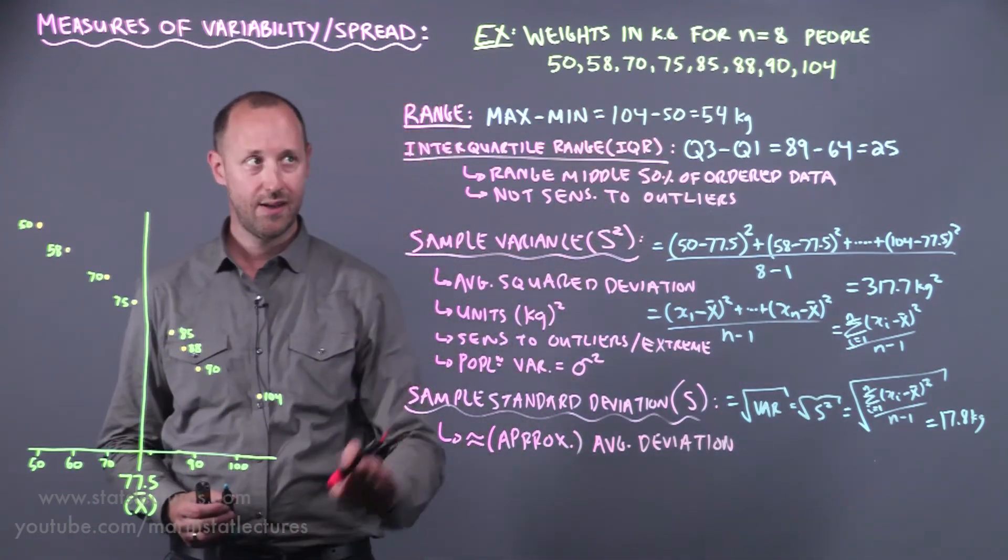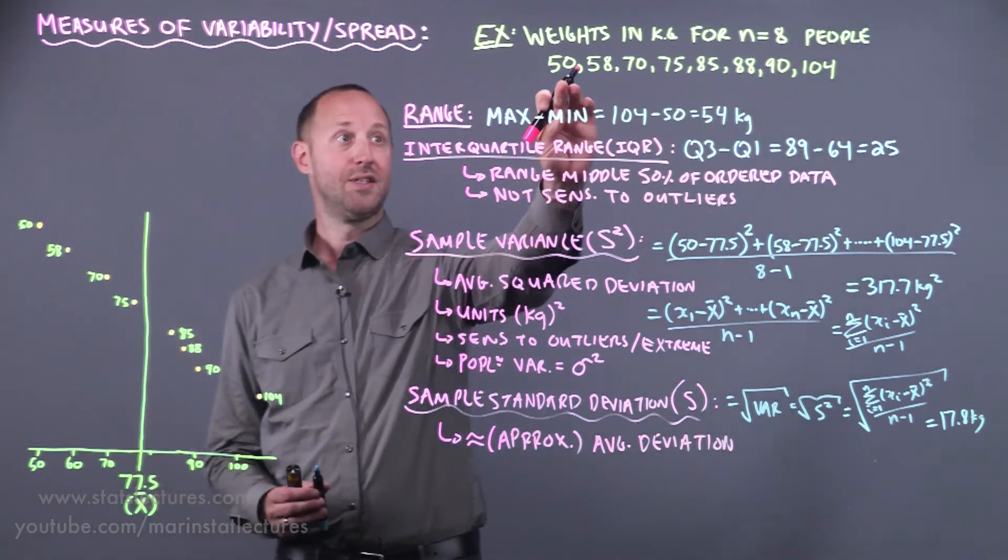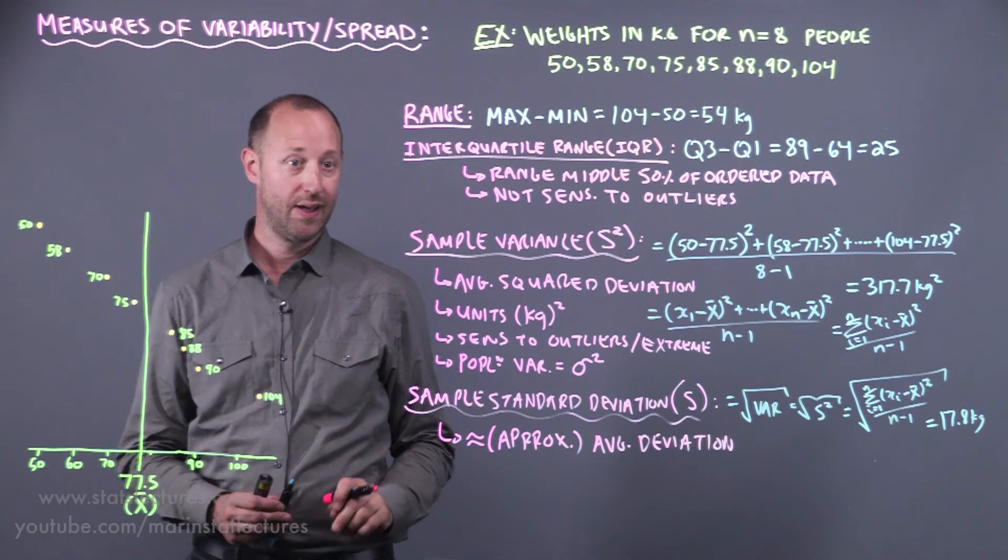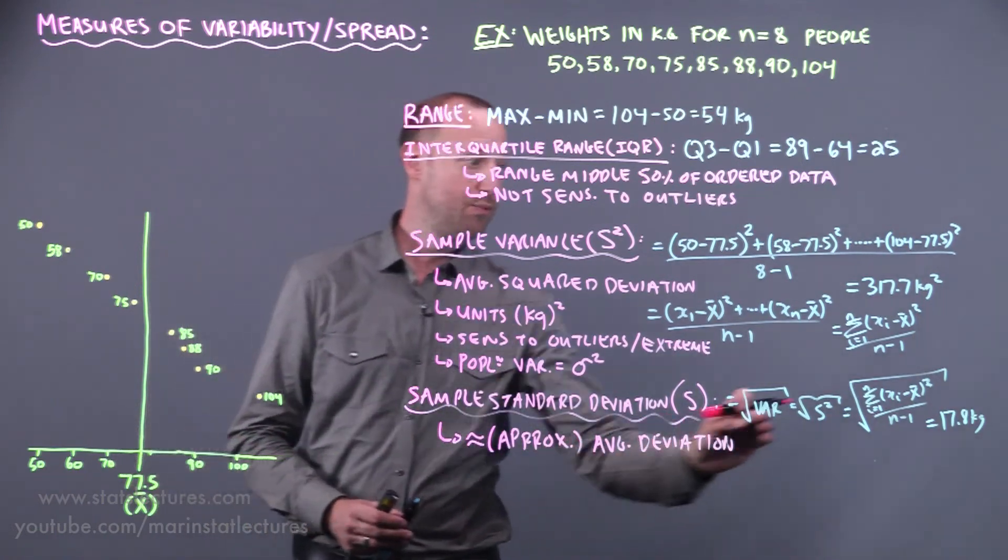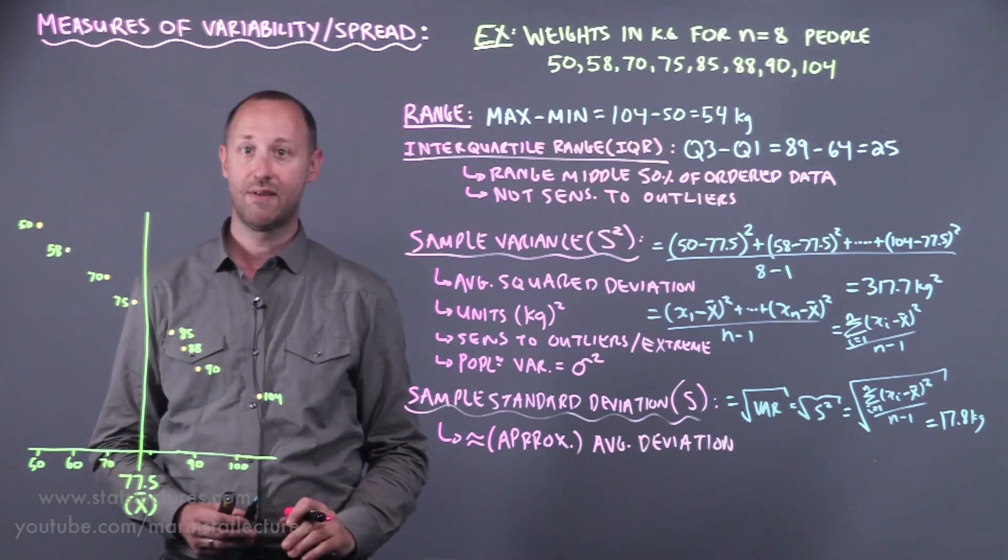Here's the weight of eight individuals. Sample mean of 77.5 kilograms. Some are moving far below, some are moving above. On average an individual's weight moves about 17.8 kilograms from that sample mean weight of 77.5.